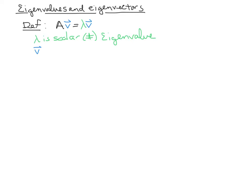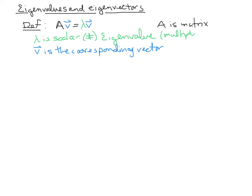The v is the corresponding eigenvector, and A is the matrix. There are multiple eigenvalues for a single matrix. A 2 by 2 matrix has two eigenvalues, a 3 by 3 will have three eigenvalues, and so on. Each one of those has a corresponding vector that goes along with this equation.